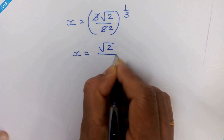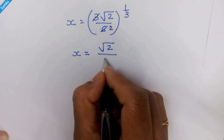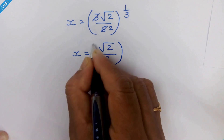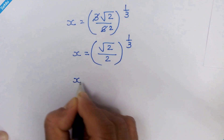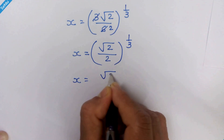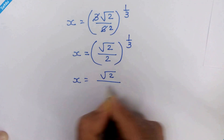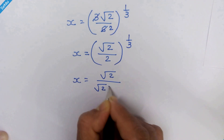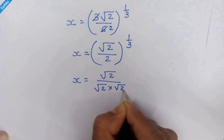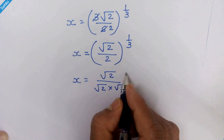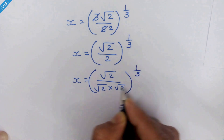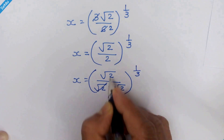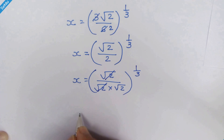We now have x = (√2 / 2) raised to 1/3. In the next step, we write 2 as √2 × √2 in the denominator. So we have (√2 / (√2 × √2)) raised to 1/3. The √2 in the numerator and one √2 in the denominator cancel out, leaving x = (1 / √2) raised to 1/3.